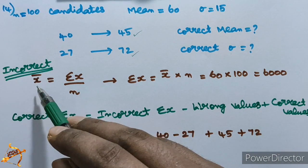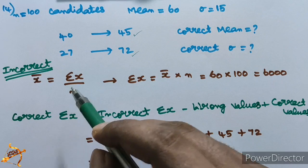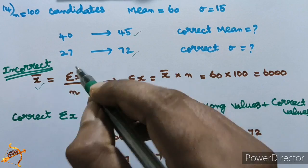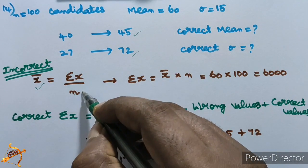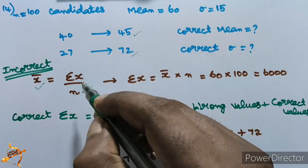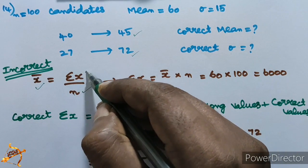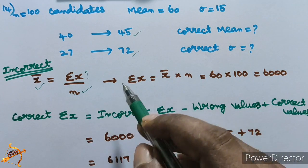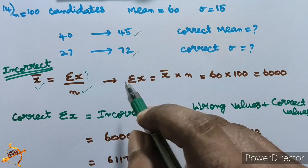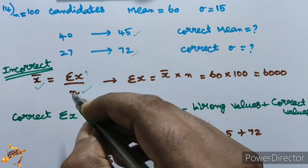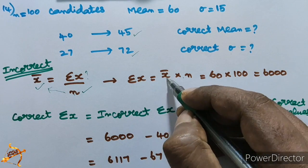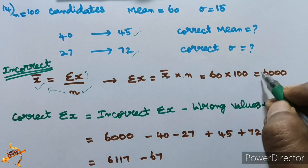First, we work with the incorrect values. x̄ = Σx / n. So x̄ is the mean, Σx is the summation, and n is 100. We know x̄ = 60 and n = 100, so Σx = x̄ × n = 60 × 100 = 6000. So the incorrect summation x is 6000.